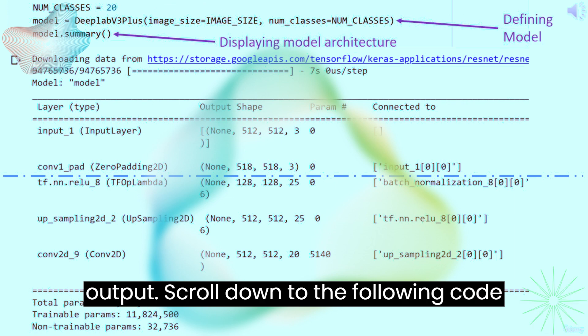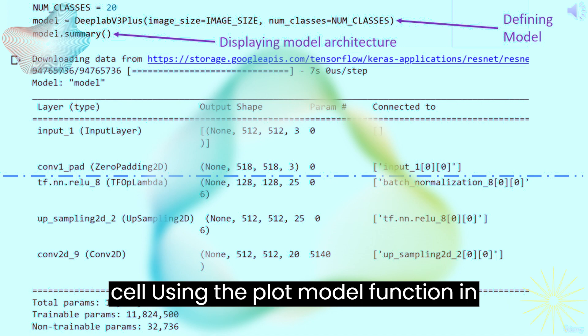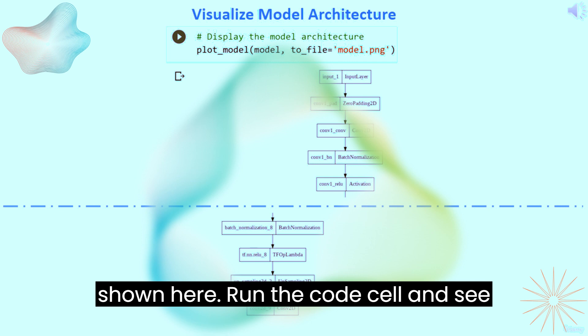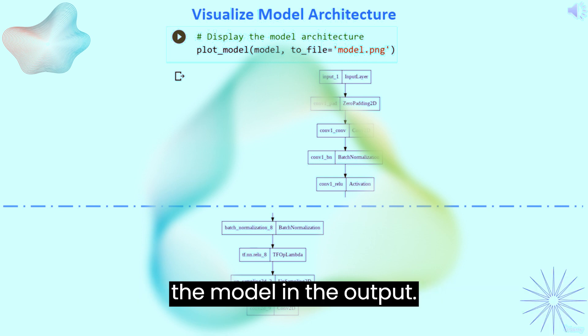Scroll down to the following code cell using the plot_model function in Keras. You can visualize the model as shown here. Run the code cell and see the model in the output.